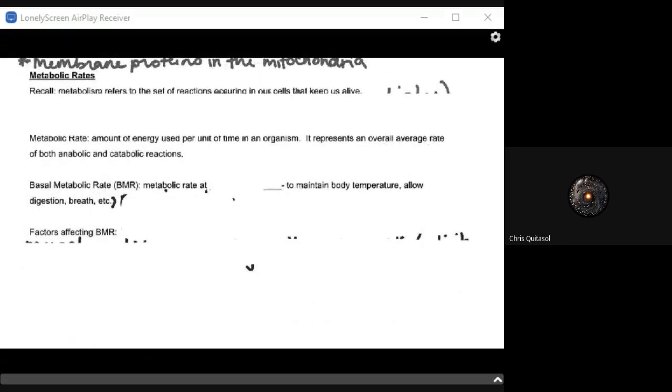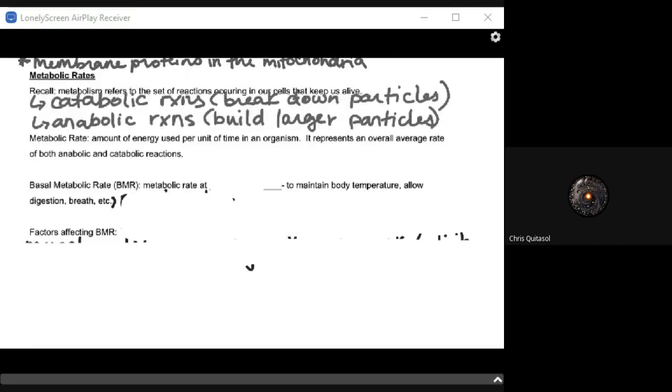So why do we study cellular respiration? What is the big reason we take a look at cellular respiration in a biological sense? It allows for us to talk about what's called metabolic rates. Recall that when we talk about metabolic rates or anything being metabolized, metabolism refers to the set of reactions occurring in our cells that essentially keep us alive.